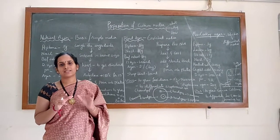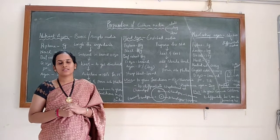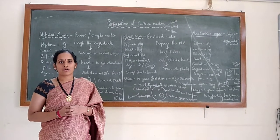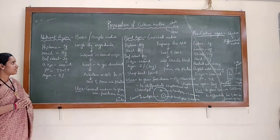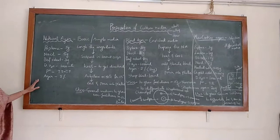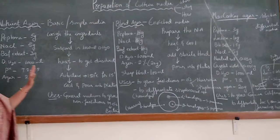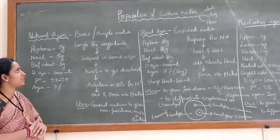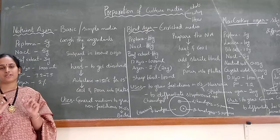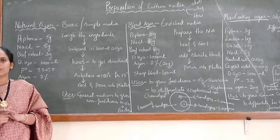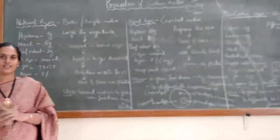These are the common ingredients or common requirements for the growth of microorganisms. Today we will look into a few examples. First, let us go with nutrient agar, which is considered the basic or simple medium because it consists of only simple nutrients commonly used for the growth of bacterial structures.